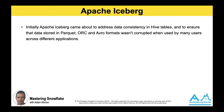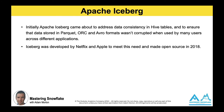Let's talk about a technology called Apache Iceberg. This initially came about to address data consistency issues in Hive tables specifically within the Apache ecosystem. It aimed to ensure that data stored in Parquet, ORC, or Avro format wasn't corrupted or misinterpreted when used by many users across lots of different applications. It was developed by Netflix and Apple to meet this particular challenge and made open source in 2018. This allows the data to appear as a regular SQL table. Iceberg also delivered more fine-grained data partitioning, better schema evolution functionality, and atomic consistency.